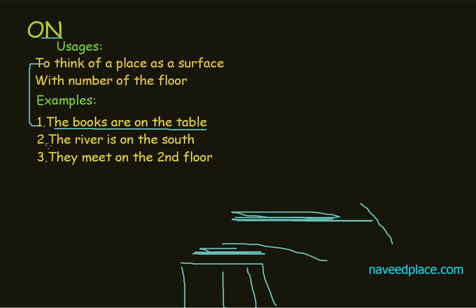The second example is: the river is on the south. This illustrates thinking of a place as a surface — we are thinking of the place as a surface.